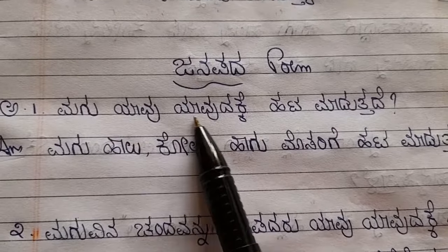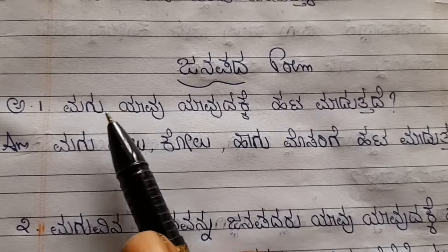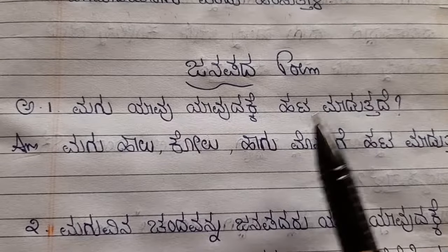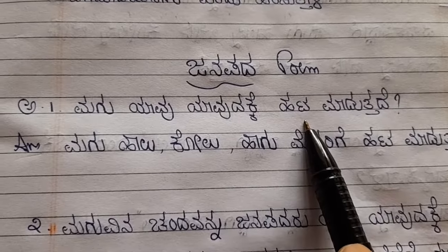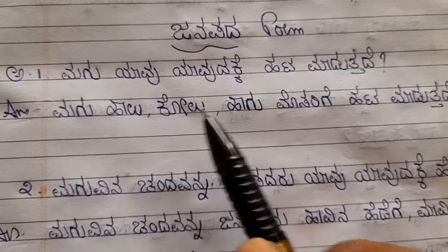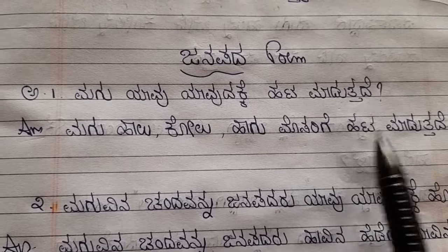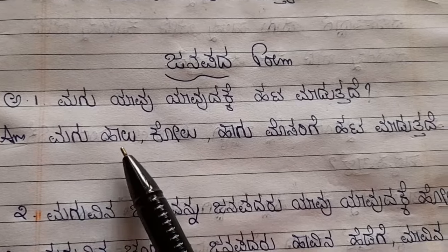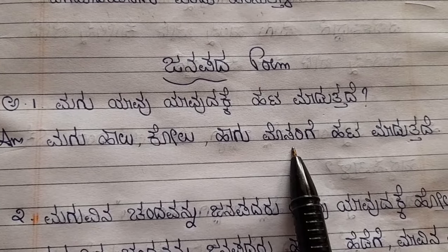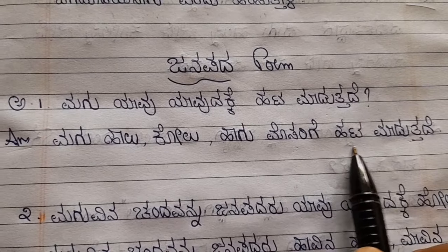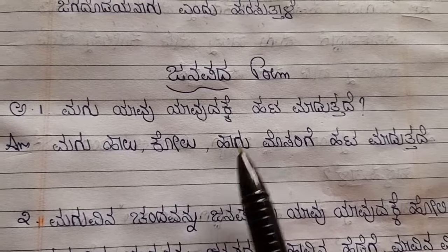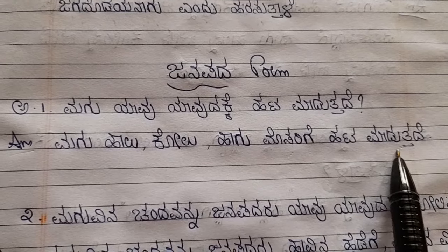First question: Magu yaavu yaavudakke hattamaduttadhe — for what does the child become stubborn and throw tantrums? Magu halu, kolu, haagu, mosarige hattamaduttadhe. The child will cry for milk, for a stick, and for curd — it will be very stubborn and start crying for those things.